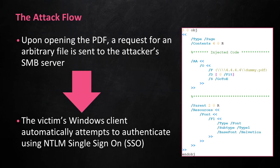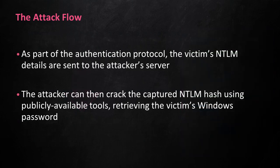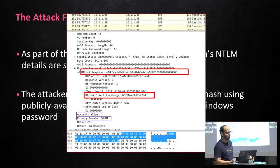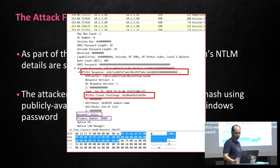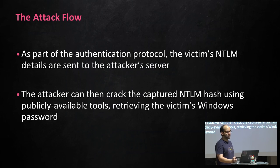When the victim opens our PDF, the action dictionary we've injected activates, causing the PDF reader to request the arbitrary file we've specified — in this case, dummy.pdf — from our malicious server at 4.4.4.4. This prompts the victim's Windows client to try and authenticate with our server using NTLM single sign-on. As part of that protocol, the victim's NTLM details — domain name, username, NTLM hash, and others — are sent to the remote SMB server. These details can easily be captured by the attacker, as shown in this Wireshark example, where a user named Alice attempted to authenticate. We can clearly see her account name, domain name, and NTLM hash. We can then use publicly available tools to crack the victim's NTLM hash, thus obtaining the Windows credentials, which can be leveraged to spread further into the target network.